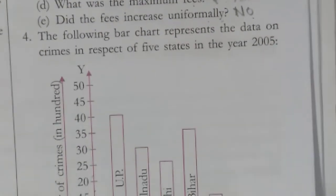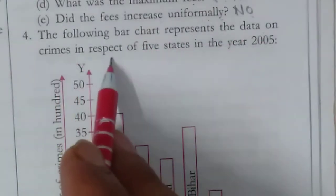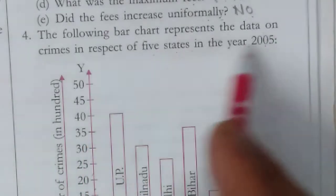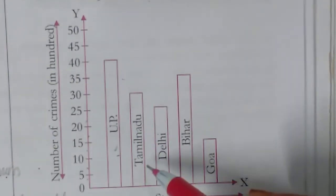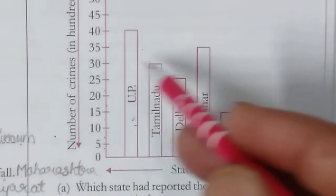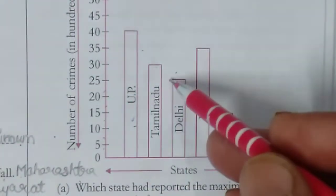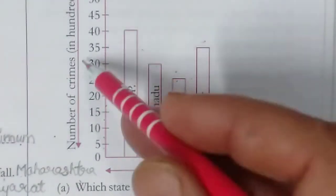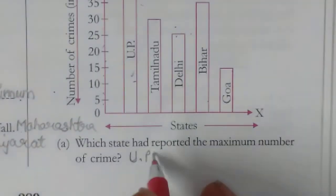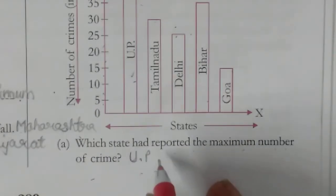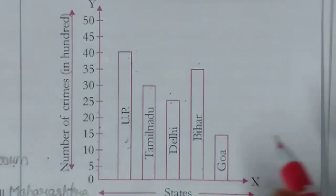Question number four: the following bar chart represents the data on crimes in five states in the year 2005. UP has the most crimes. Tamil Nadu has 30 hundreds, Delhi has 25 hundreds, Bihar has 35 hundreds, and Goa has 1500. Which state had reported the maximum number of crimes? UP had the most — 40 hundred, i.e., 4,000 crimes in 2005.